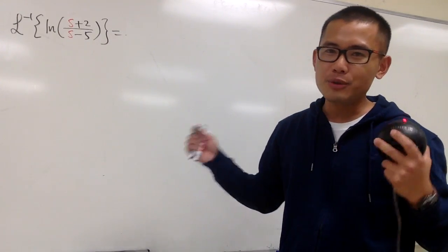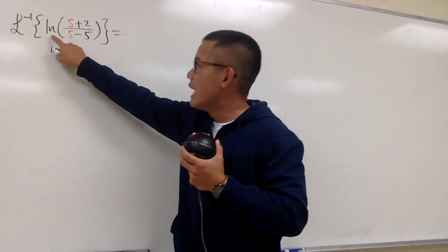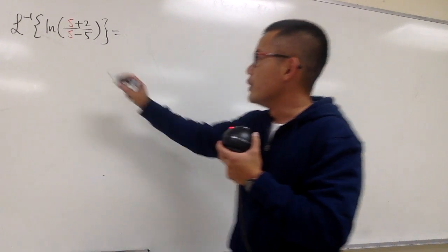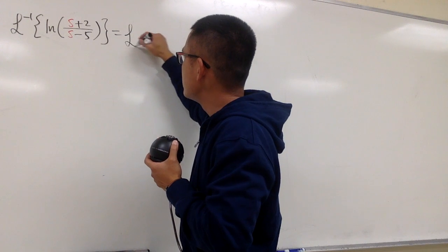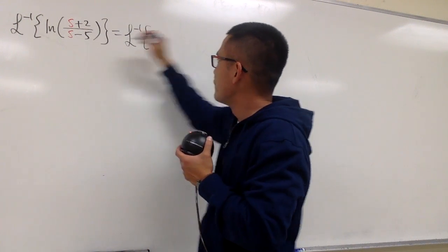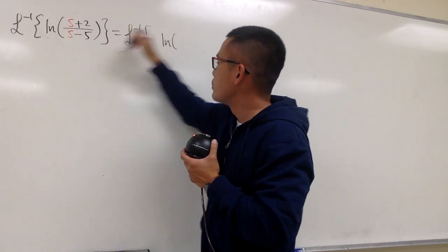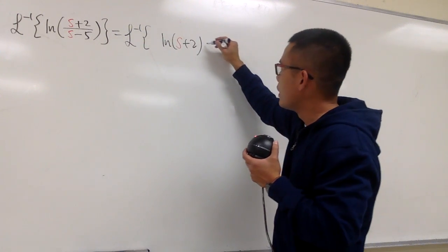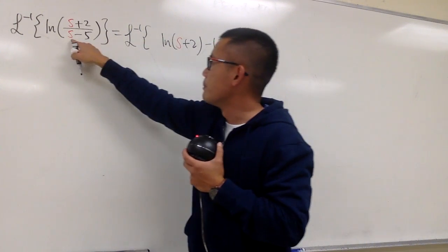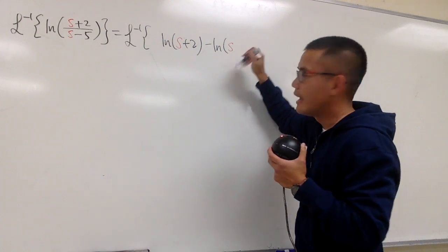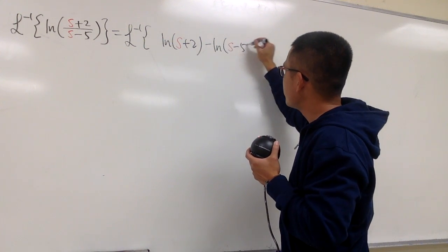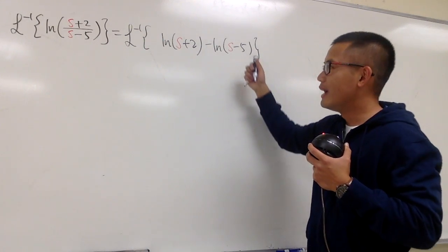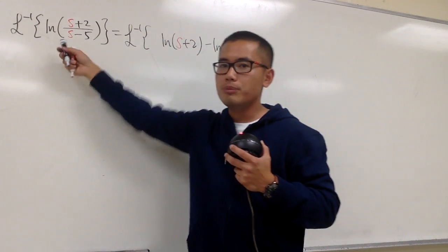Let's go back to the fundamental. We have ln of a quotient, so we can break them apart by one of the ln properties. This is going to be the same as the inverse Laplace of ln of the top, which is (s+2), and then minus the second ln of the bottom, which is (s-5).